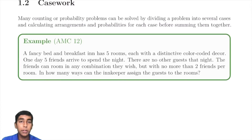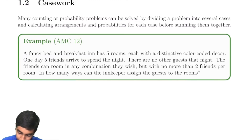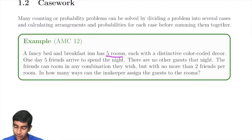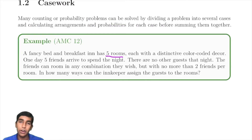Casework is just splitting a problem into multiple cases. It's better said with an example, so let's see this AMC-12 problem. A fancy bed and breakfast inn has five rooms, each with a distinctive color-coded decor. They're just saying this to tell you that the rooms are different.